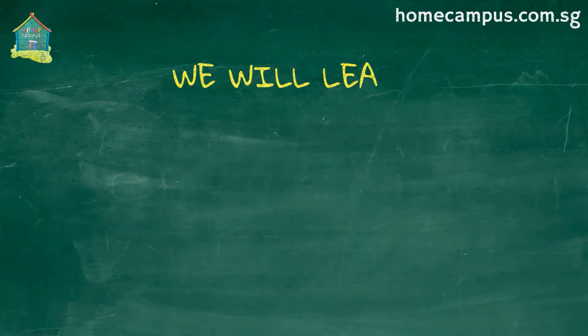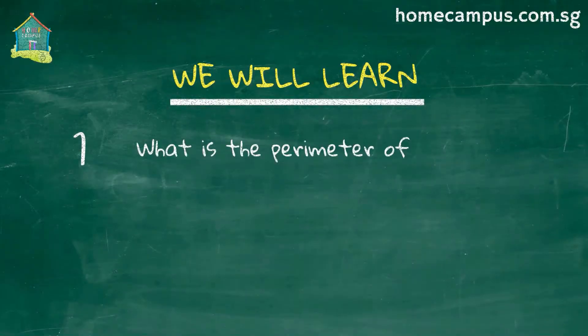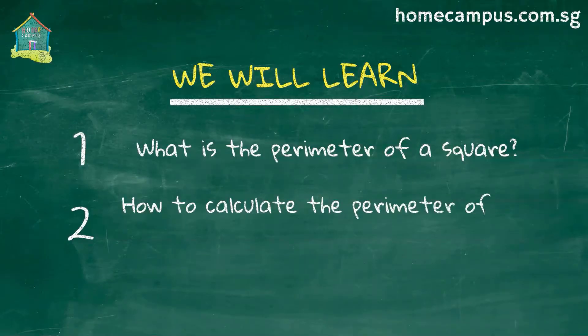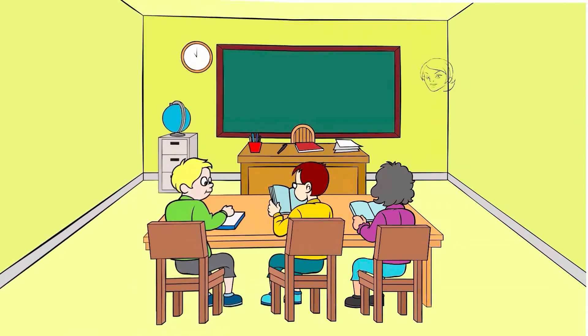In this tutorial we will find out what it means by the perimeter of a square, then we will determine the formula to calculate the perimeter of a square and you'll see an example. Welcome to Home Campus, the Singapore maths YouTube channel.